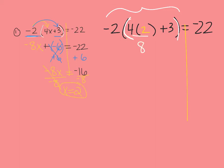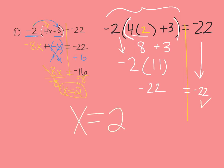We know we have to multiply first. 4 times 2 is 8. 8 plus 3 is 11. Then I'm just bringing down this negative 2 to multiply. It's my last step here. Negative 2 times 11 is negative 22. And what do you know? It equals the right hand side. So our answer checks—x does equal 2. We've just proven it as well.